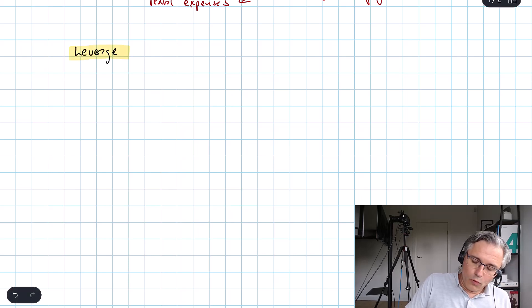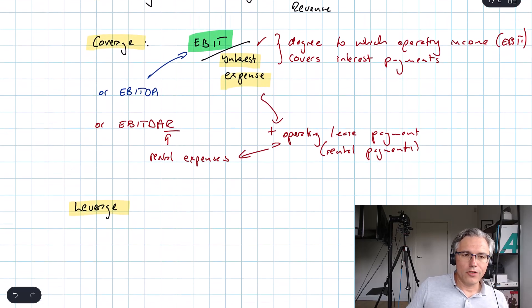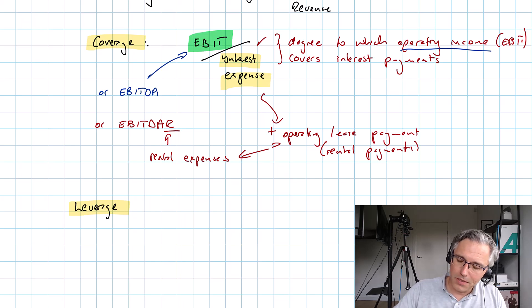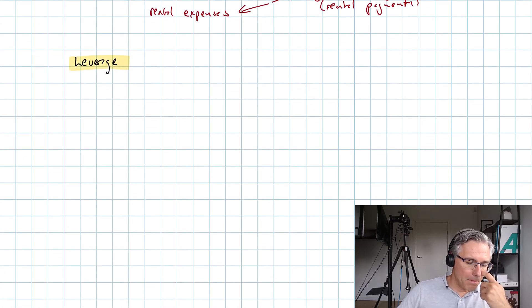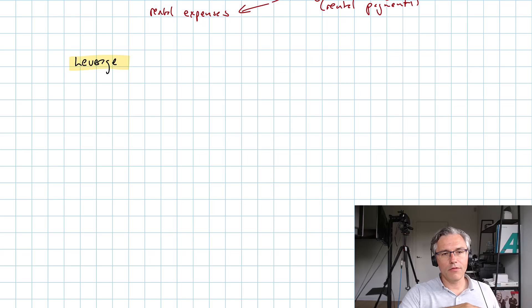So the way to be able to match them is, coverage measures the degree to which operating income, or some variant of it, covers debt related payments, be they pure interest expense or interest expense plus principal payments. Right, if you've got a ratio that's structured in this way it will belong under the heading coverage. Leverage measures, as we said in a previous video, the relative extent to which a company relies on debt funding.